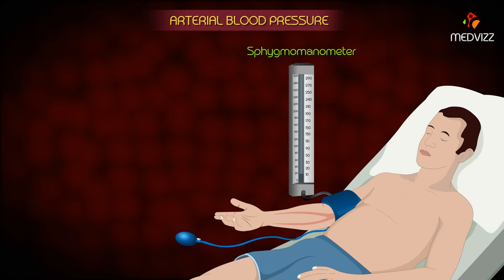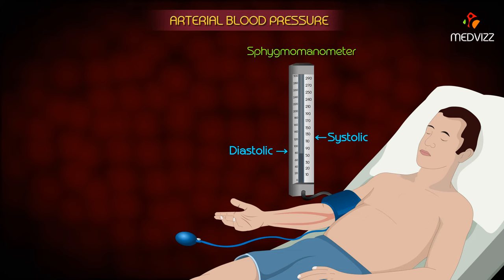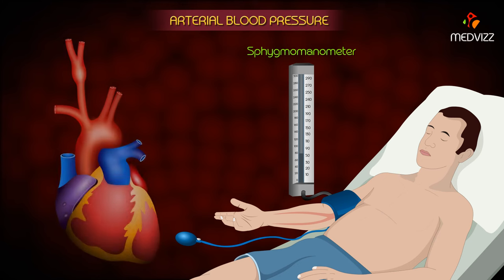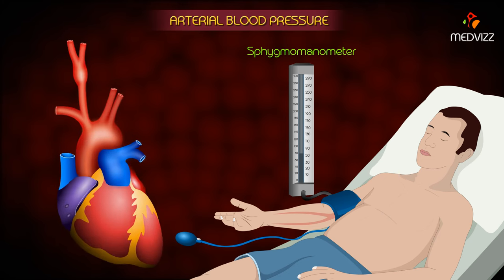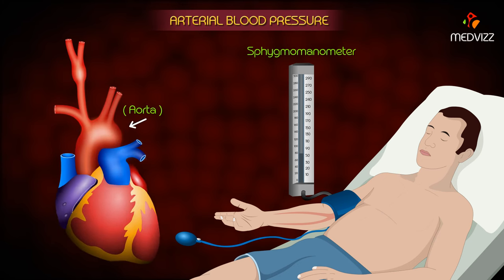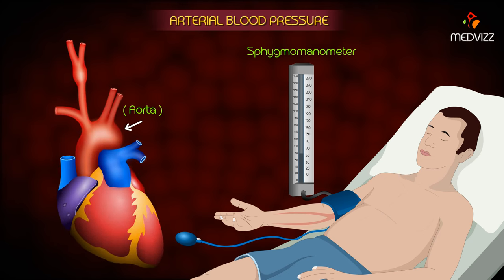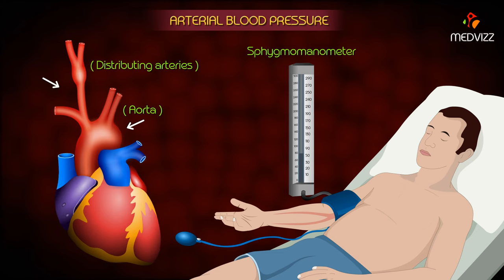When the arterial pressure is measured using a sphygmomanometer — that is, the blood pressure cuff on the upper arm — the systolic and diastolic pressures that are measured represent the pressure within the brachial artery, which is slightly different than the pressure found in the aorta or the pressure found in other distributing arteries.